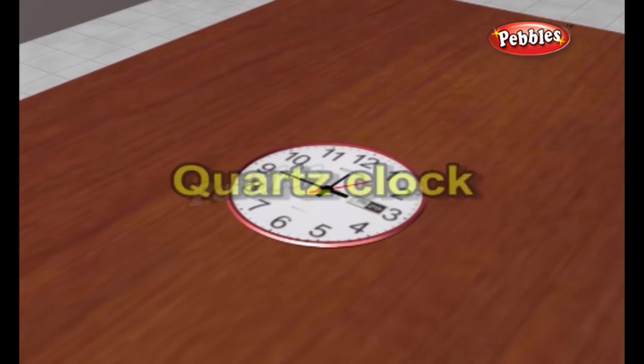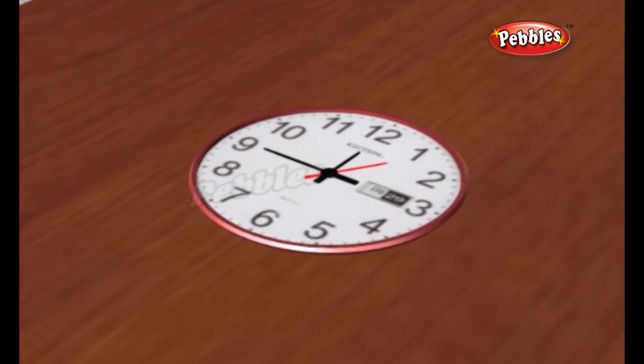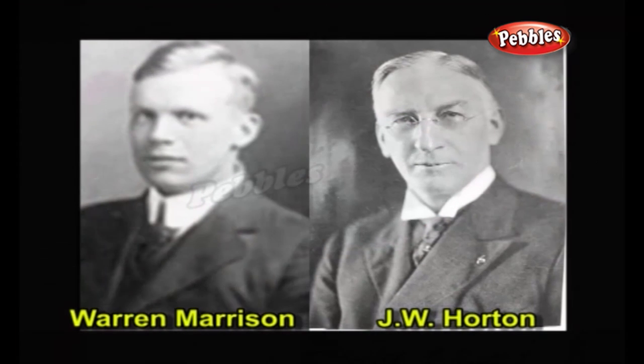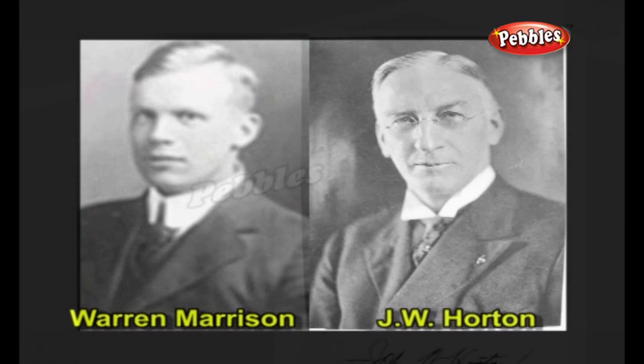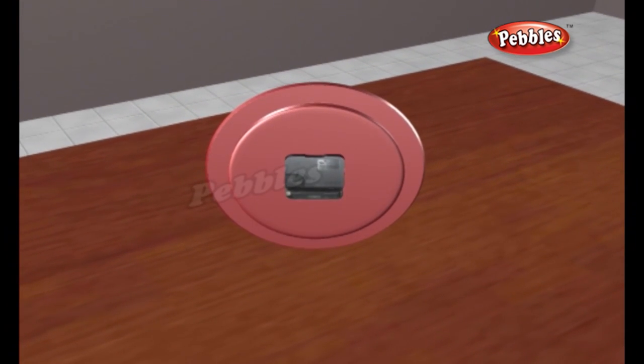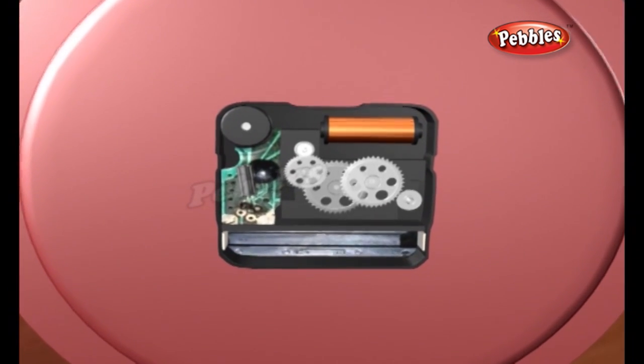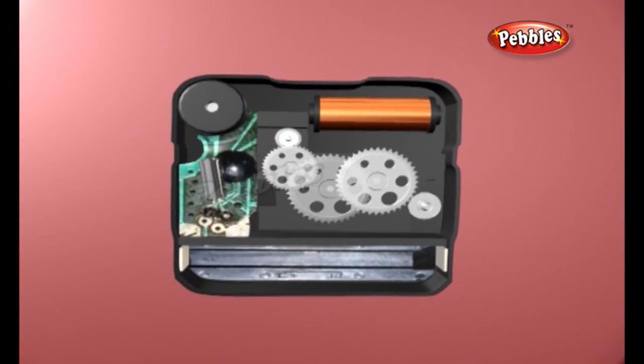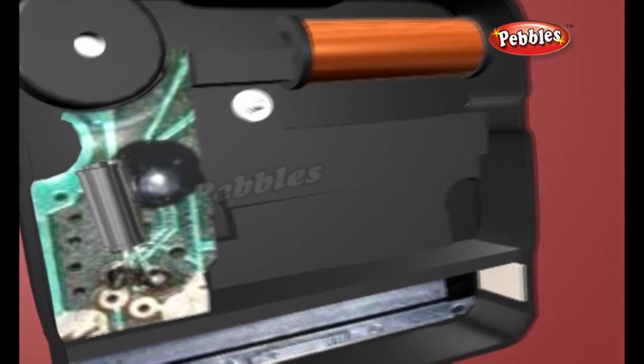Quartz Clock. A quartz clock is a clock that uses an electronic oscillator that is regulated by a quartz crystal to keep time. In 1927, the first quartz clock was built by Warren Morrison and J.W. Horton at Bell Telephone Laboratories. Quartz watches work in a very different way to a pendulum clock and ordinary watches. They still have gears inside them to count the seconds, minutes and hours and sweep the hands around the clock face. But the gears are regulated by a tiny crystal of quartz instead of a swinging pendulum or a moving balance wheel.